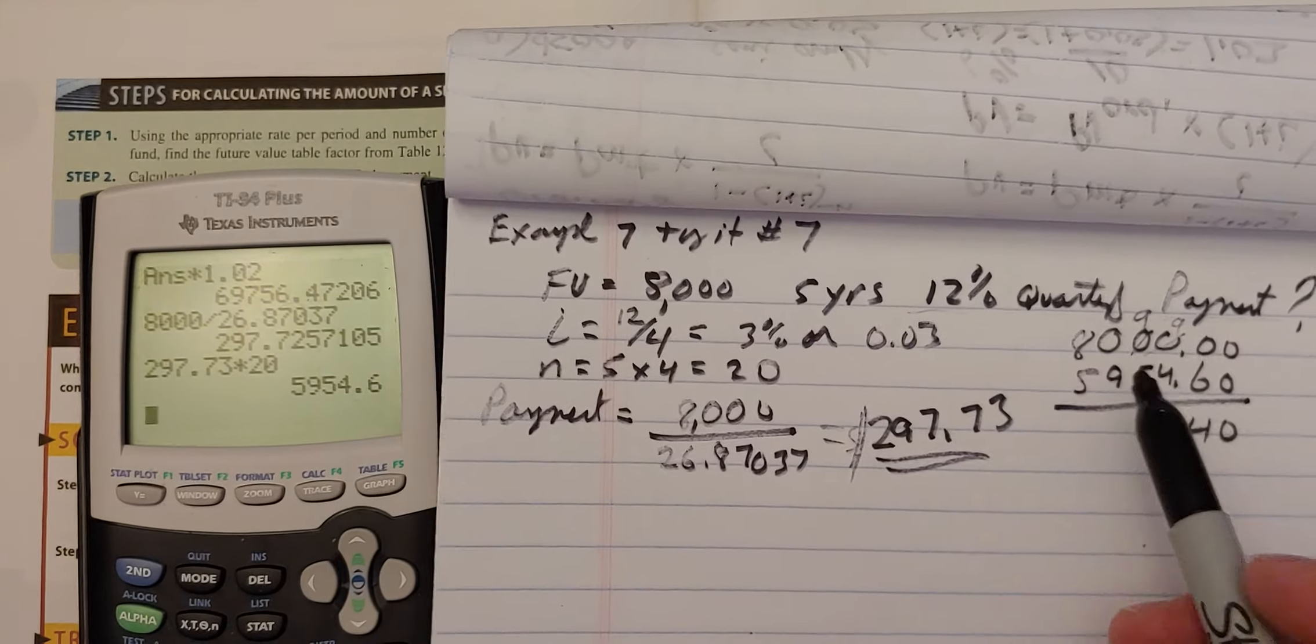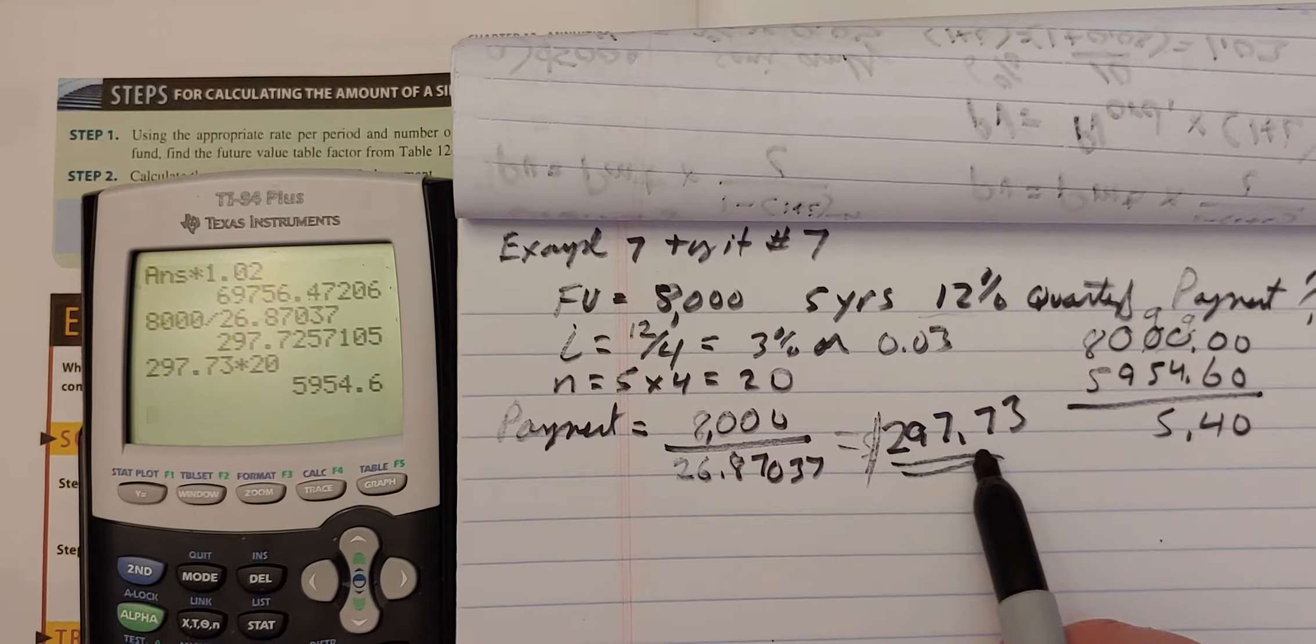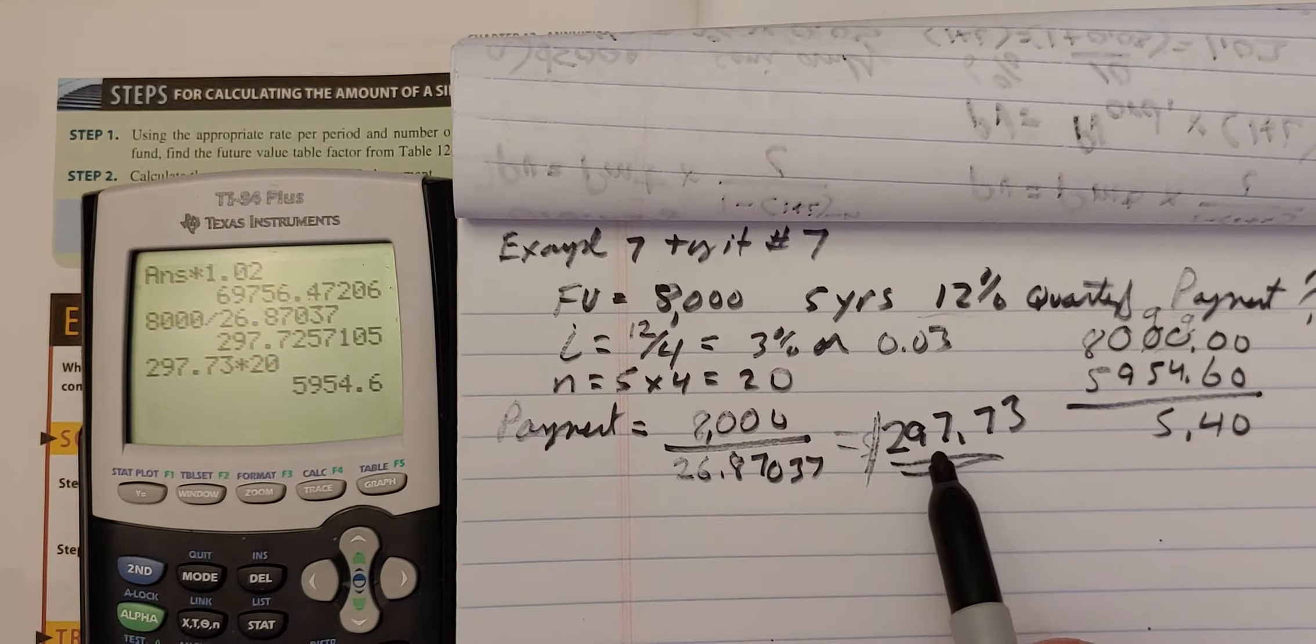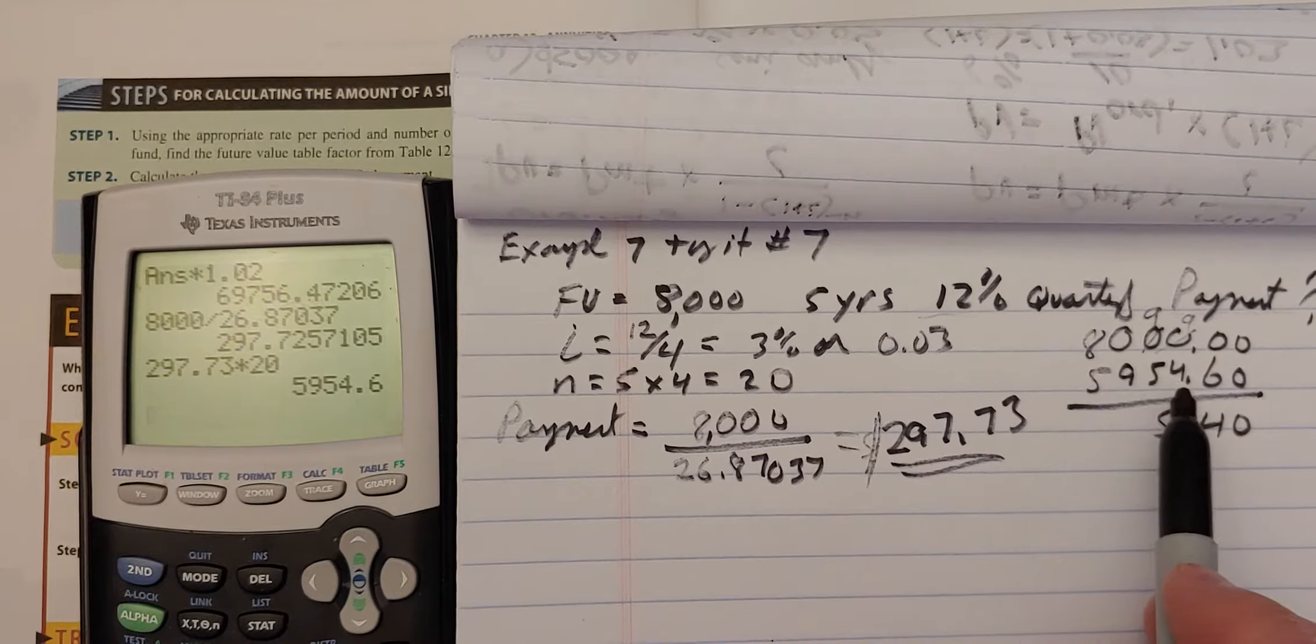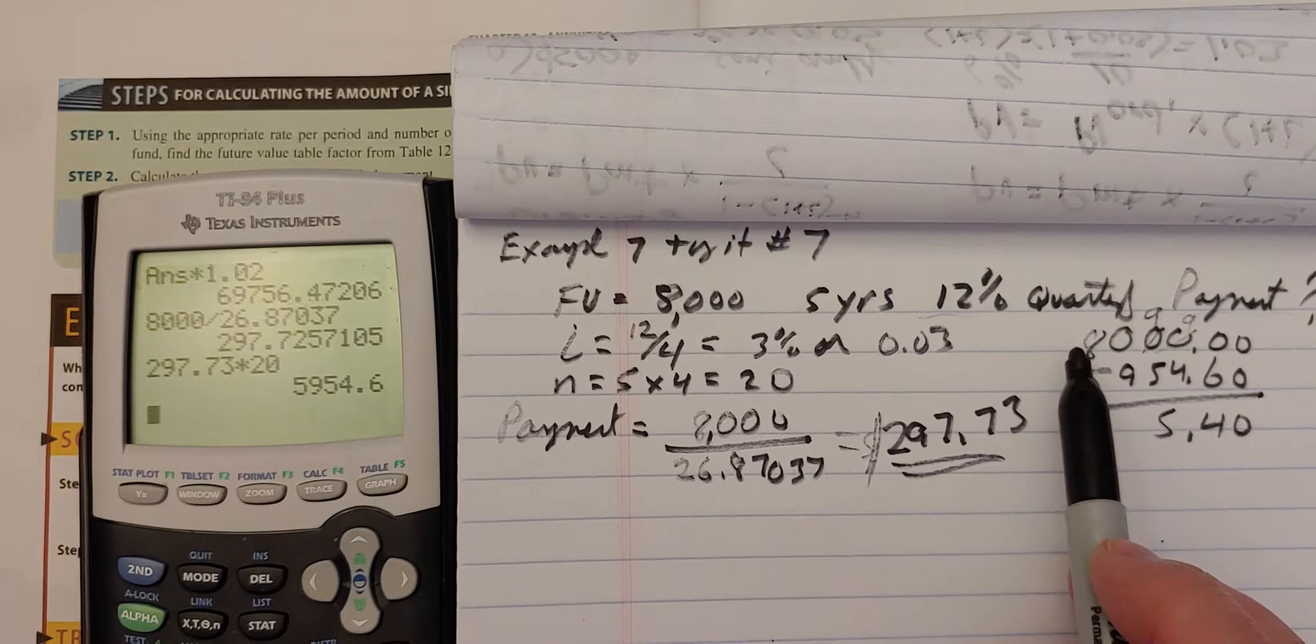So I wanted $8,000 for my future value. And I have, and those payments, $297.73, 20 of them, equals $5,954.60 out of my pocket.